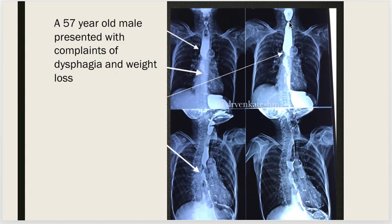This narrowing is nothing but cricopharyngeal spasm. The next finding is irregular mucosa involving the mid one third of the esophagus, which is clearly depicted here. Most importantly, you can see a smooth curved filling defect on either side — this is called the shouldering effect, due to a lesion within the lumen of the esophagus.